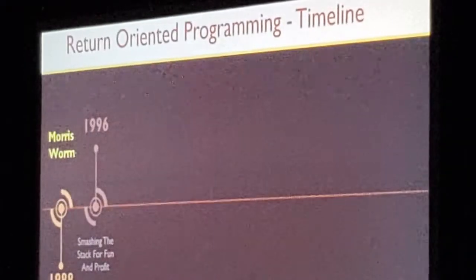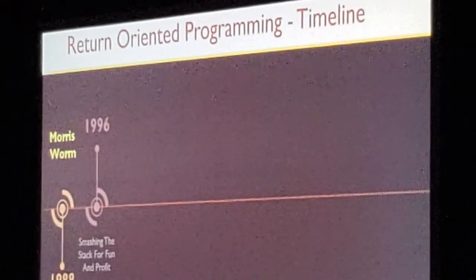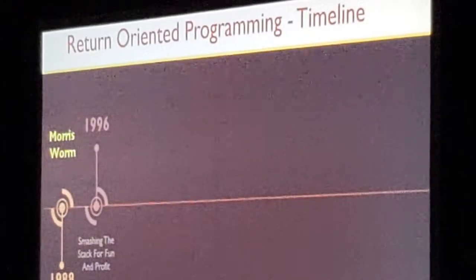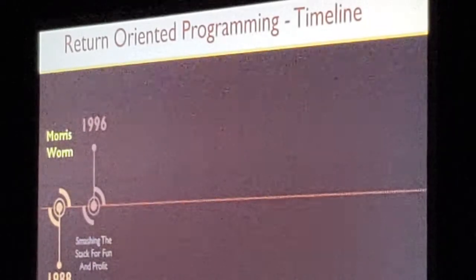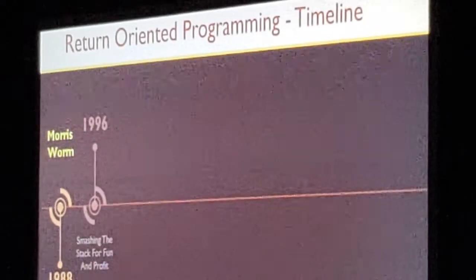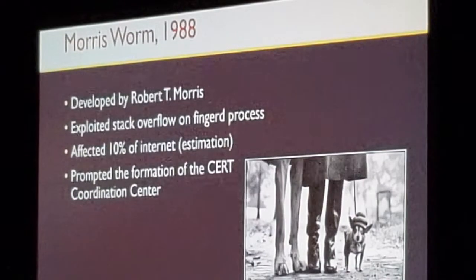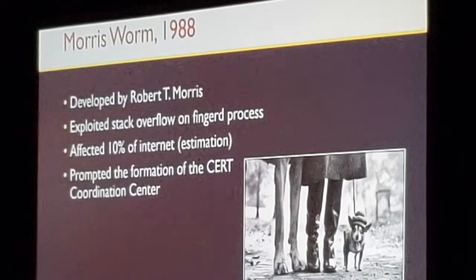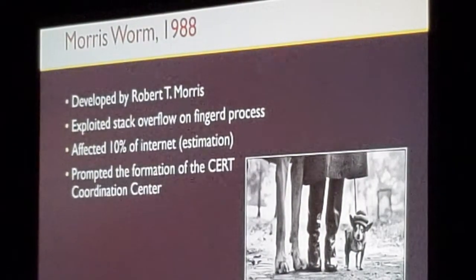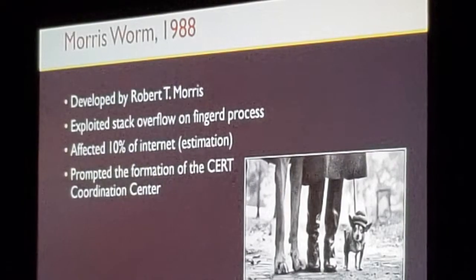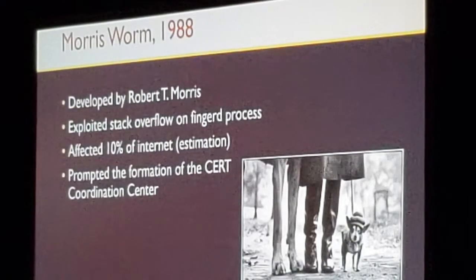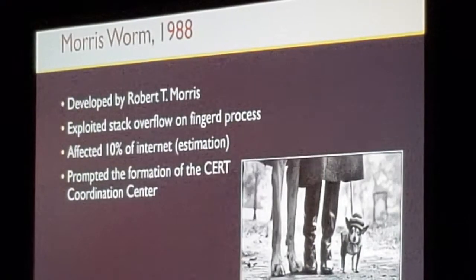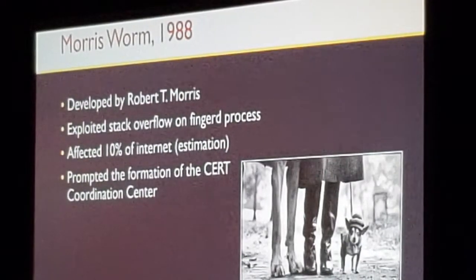This is not hypothetical at all. That was the exact source code, the exact buffer overflow, and the exact shellcode that was used on the Morris Worm — and that was 1988, almost a decade before Aleph One published his article on stack overflow. So the security industry actually knew about stack overflow and the potential hazardous disaster it could cause, but still didn't do anything. It was so bad that it prompted the formation of the CERT Coordination Center.